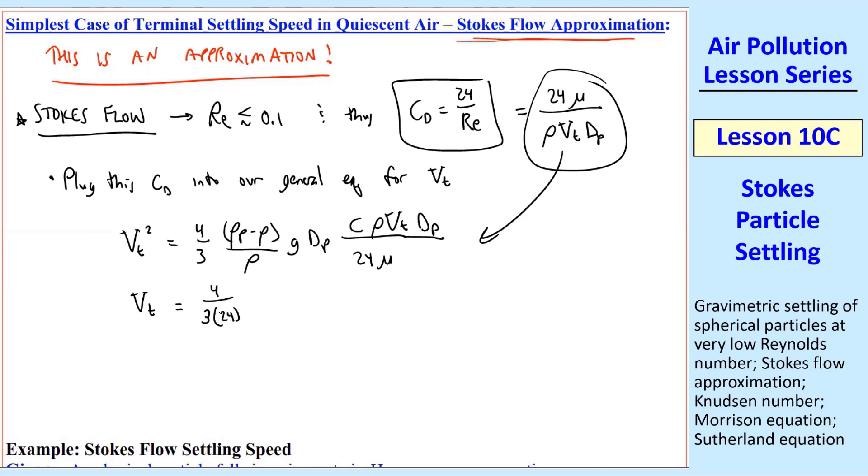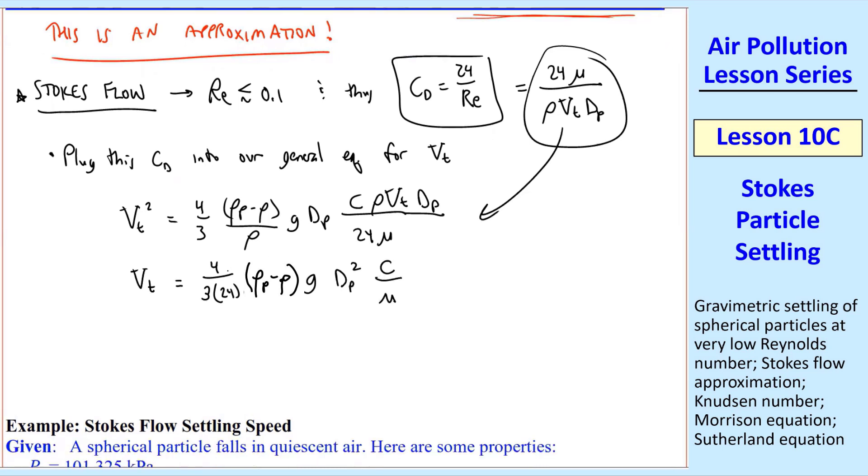I'm going to group those constants all together. Rho p minus rho g, and then there's two dp's, so this is a dp squared. And then finally, your Cunningham and your mu. And this grouping of constants becomes 1 over 18, so our final equation is vt is rho p minus rho over 18, g dp squared, c over mu.